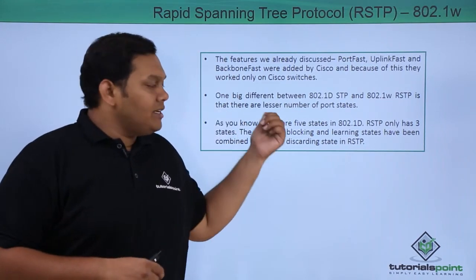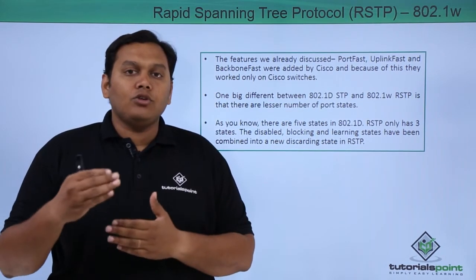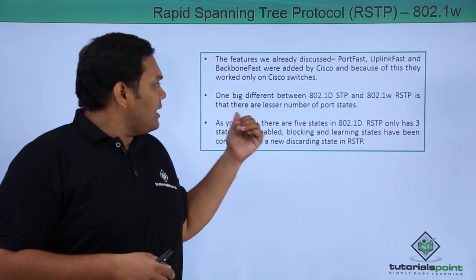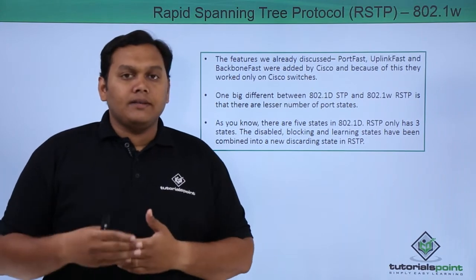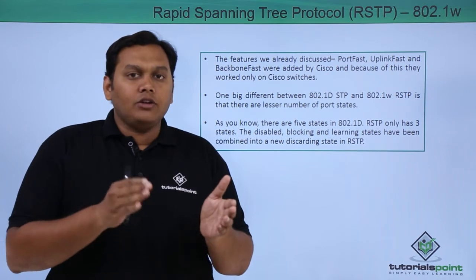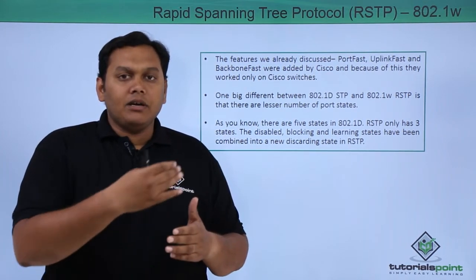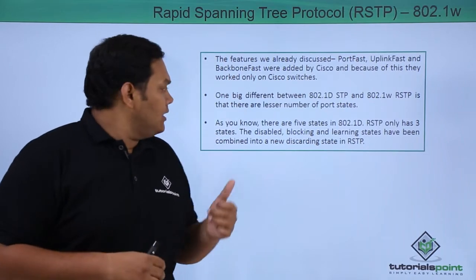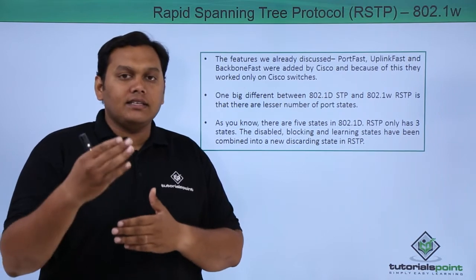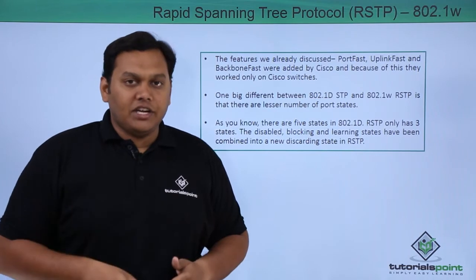One big difference between 802.1d Spanning Tree Protocol and 802.1w Rapid Spanning Tree Protocol is that there are fewer port states. We have 5 port states in 802.1d, but in RSTP it becomes only 3 port states. The disabled, blocking, and listening states are all consolidated under the discarding state in RSTP.